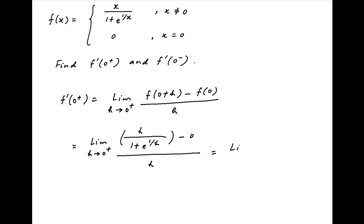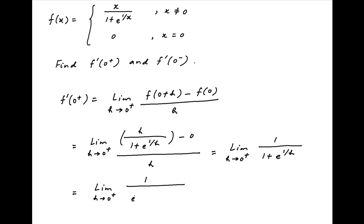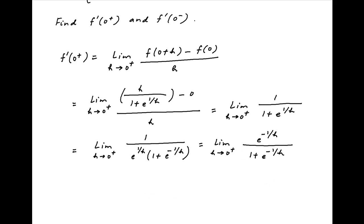This simplifies to the limit as h tends to 0 from the positive side of 1 / (1 + e^(1/h)). This can be rewritten as the limit as h tends to 0 from the positive side of 1 / [e^(1/h) × (1 + e^(-1/h))], which equals e^(-1/h) / (1 + e^(-1/h)).